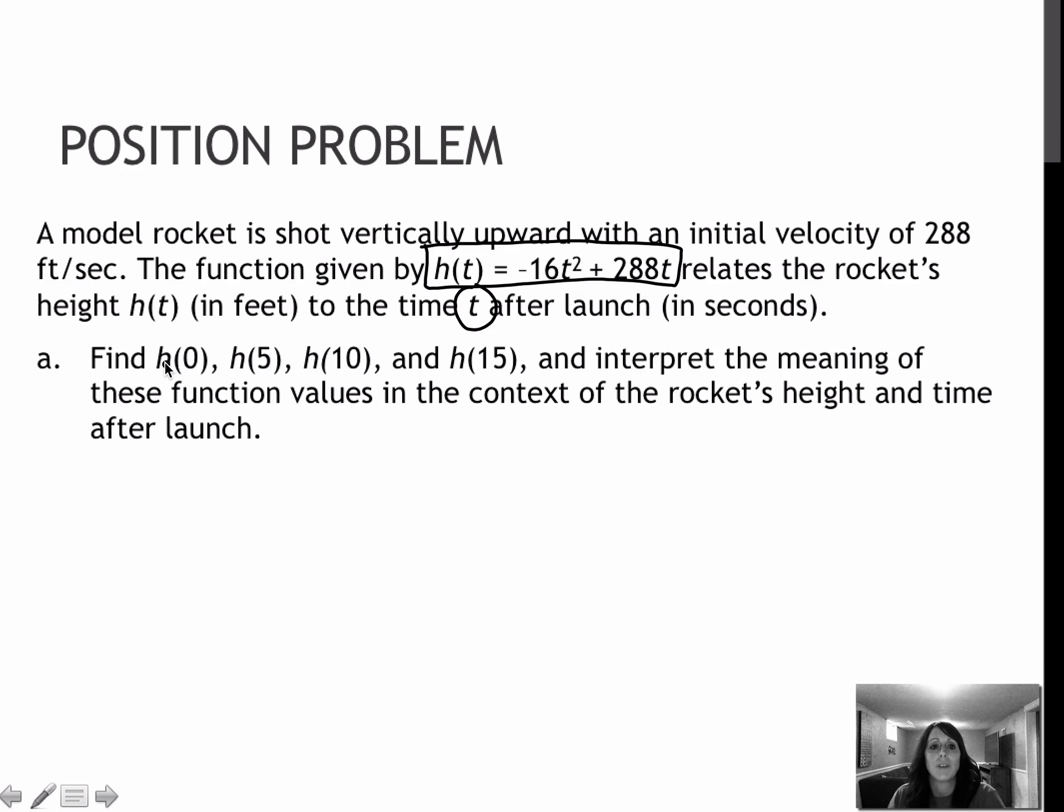So they're asking me to find h(0), h(5), h(10), and h(15) and then interpret what that means. So h(0) would be negative 16 times 0 squared plus 288 times 0. Order of operations says 0 squared first, then times negative 16, which is 0. 288 times 0 is 0. And the interpretation of that would be at 0 seconds, the height of the rocket is 0 feet, which makes sense because we haven't launched it yet.